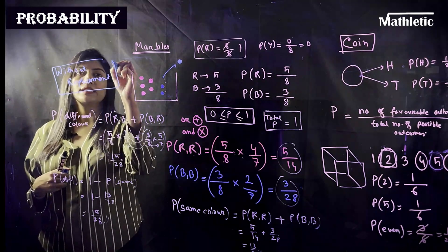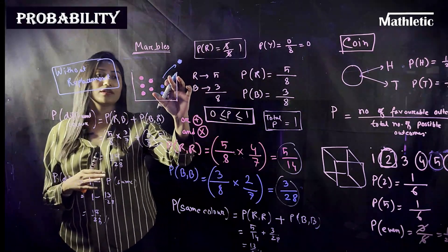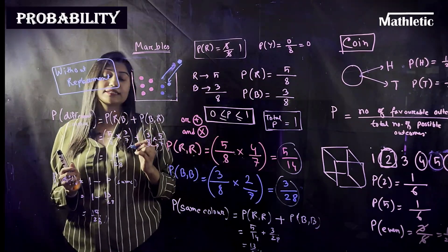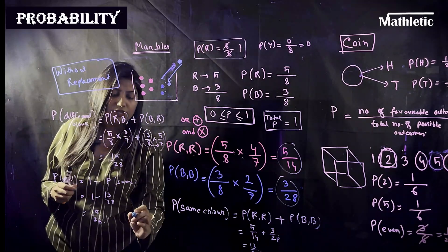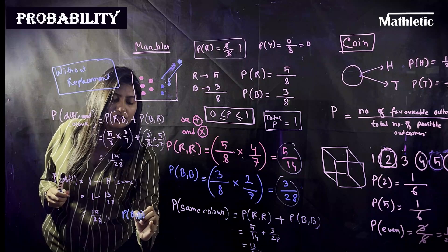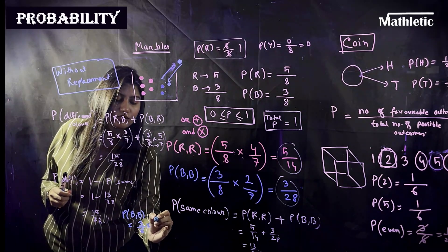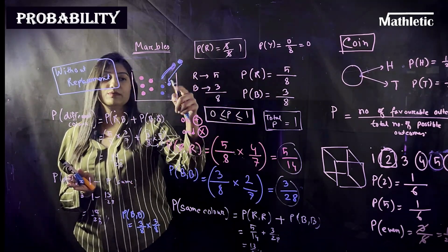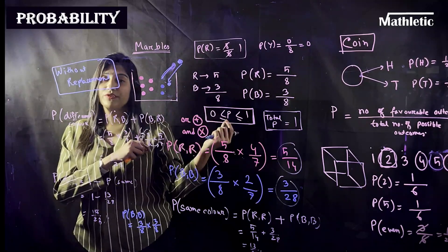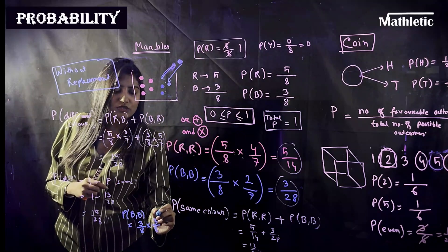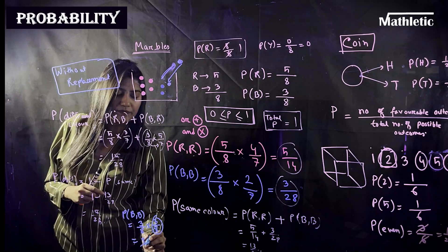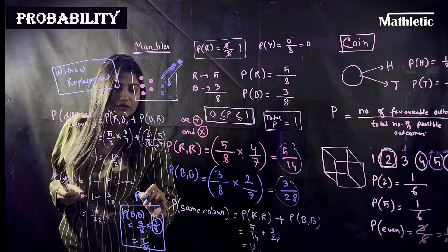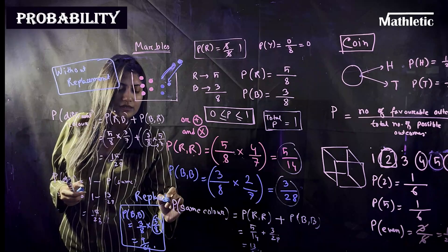But if the question states that the first marble picked is replaced back into the box, then the numbers do not decrease. For example, the probability of blue then blue with replacement is three-eighths times three-eighths, because after replacing the first marble the count stays the same. This gives nine-sixty-fourths — this is the calculation whenever marbles are replaced.